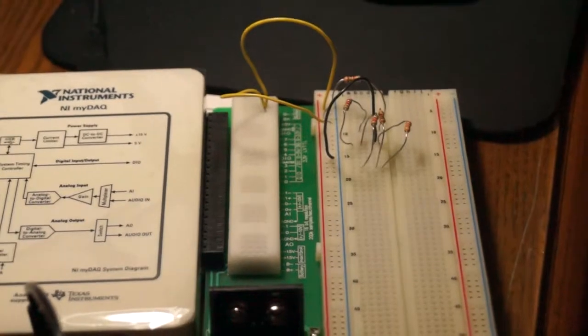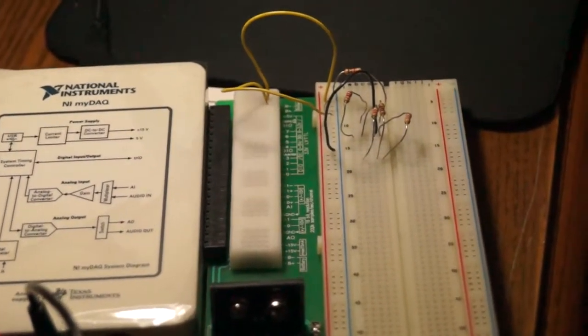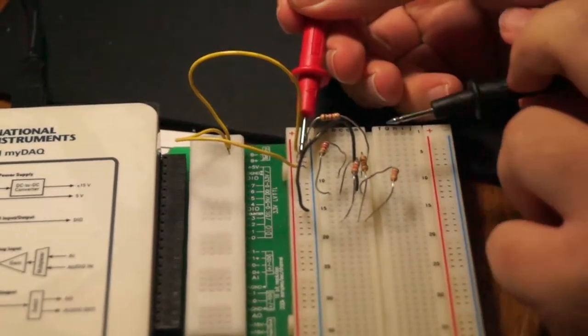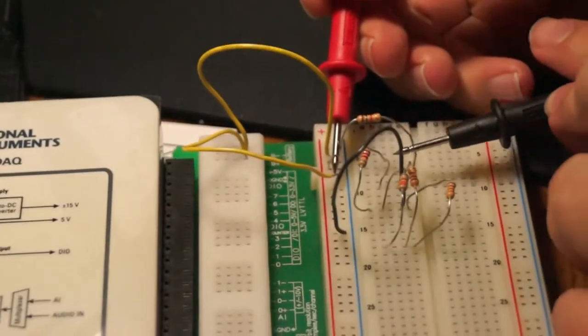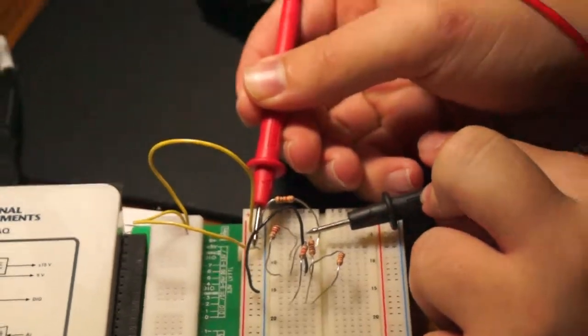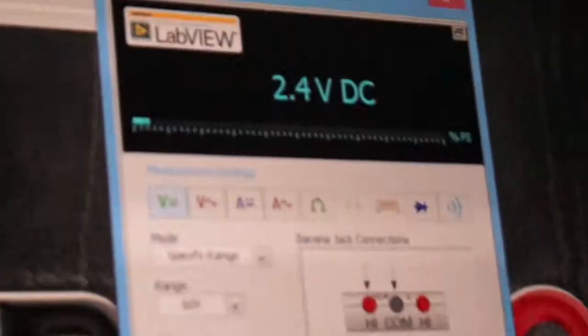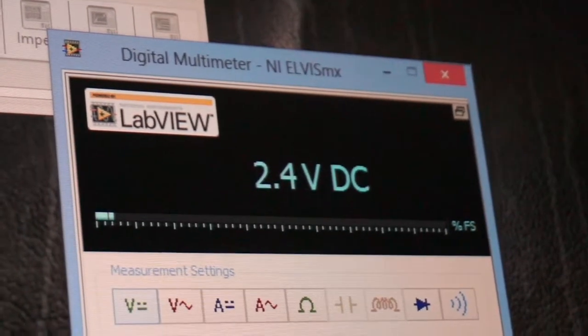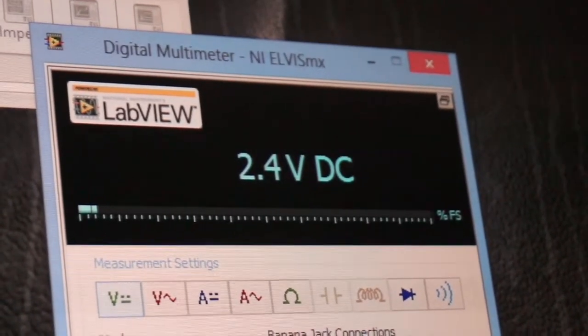The next thing you're going to do is measure the voltage across each resistor. To do this, place one prong on one side of the resistor and another on the other side. You'll get an approximate voltage drop across each resistor shown up there. Do this for each resistor and record the values that you find.